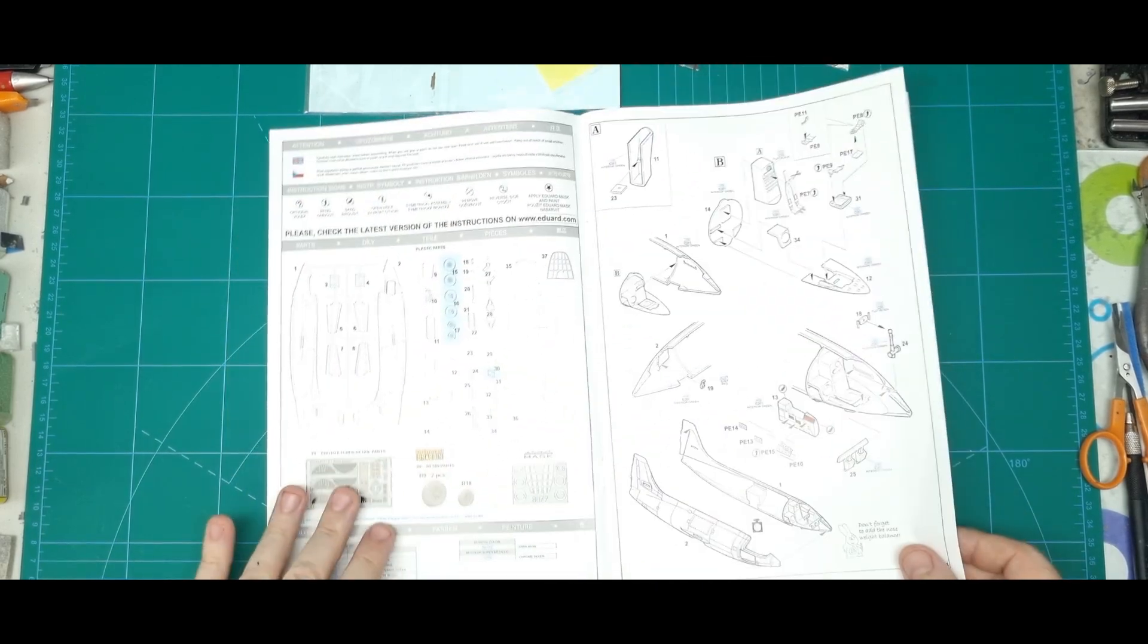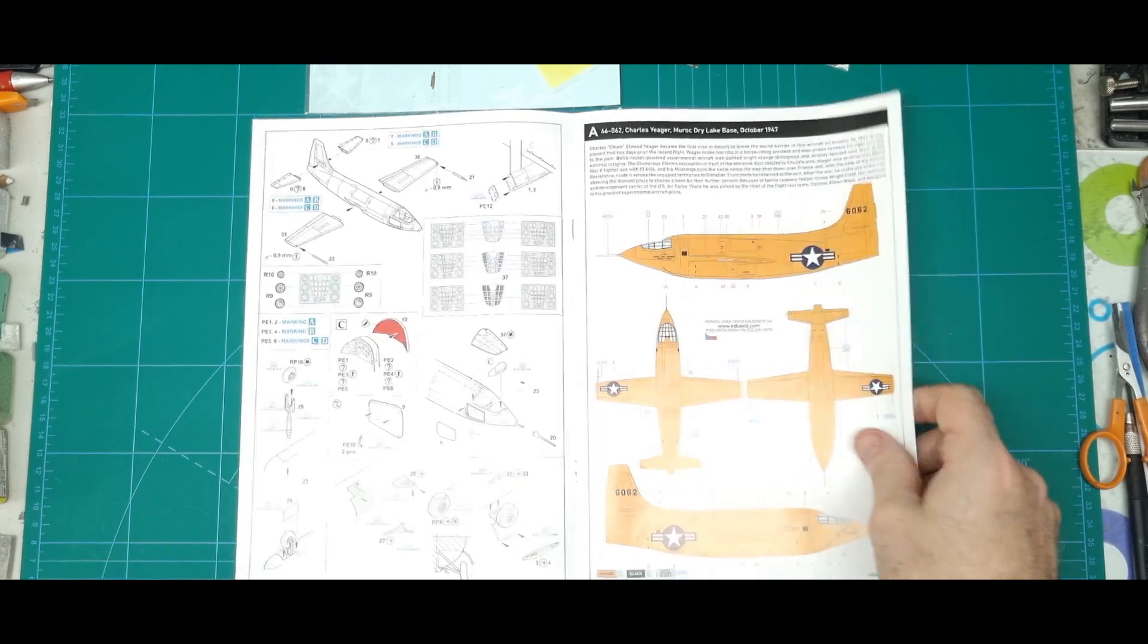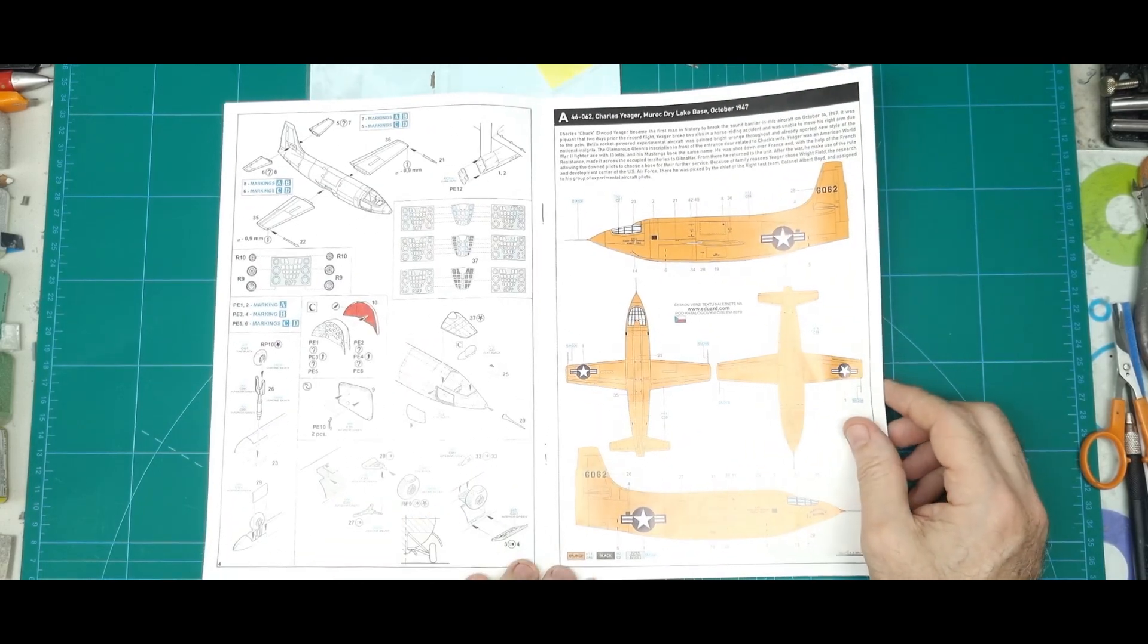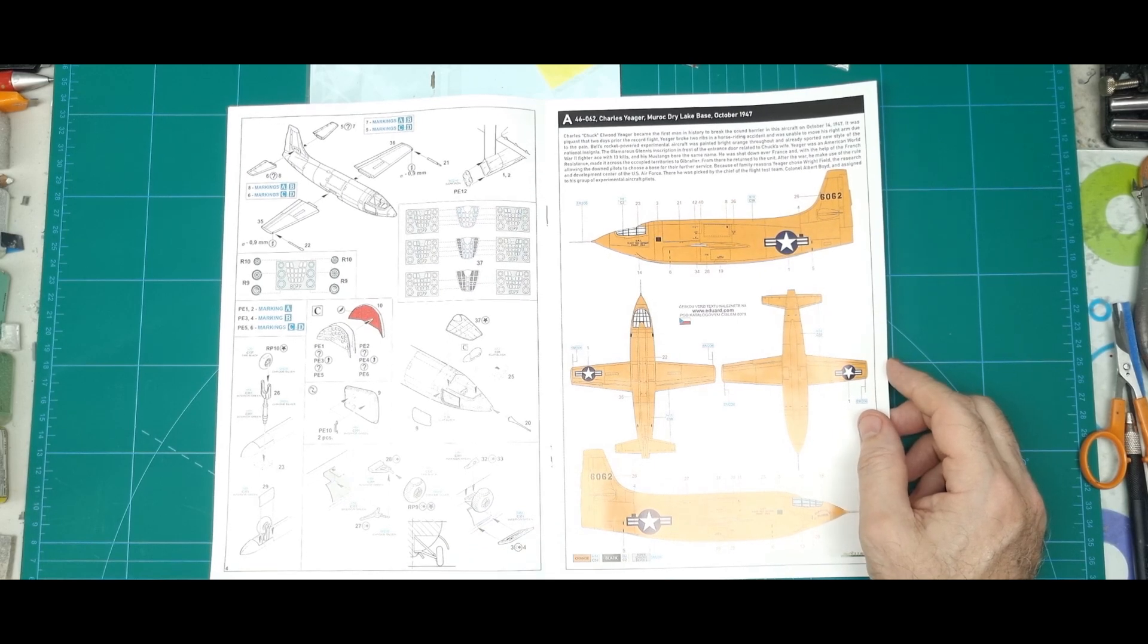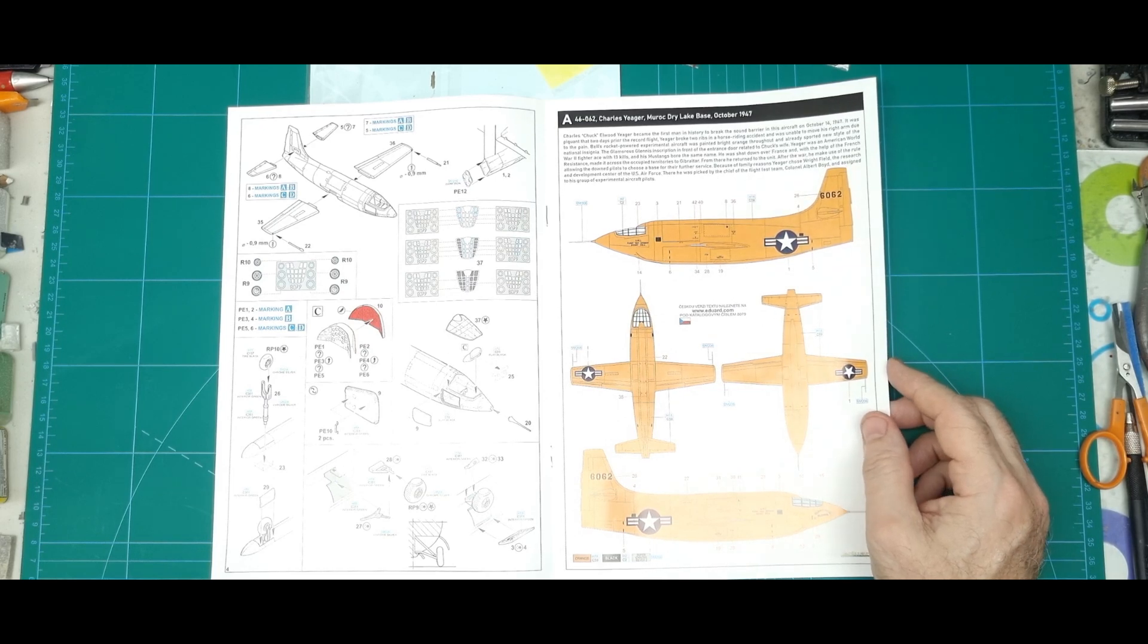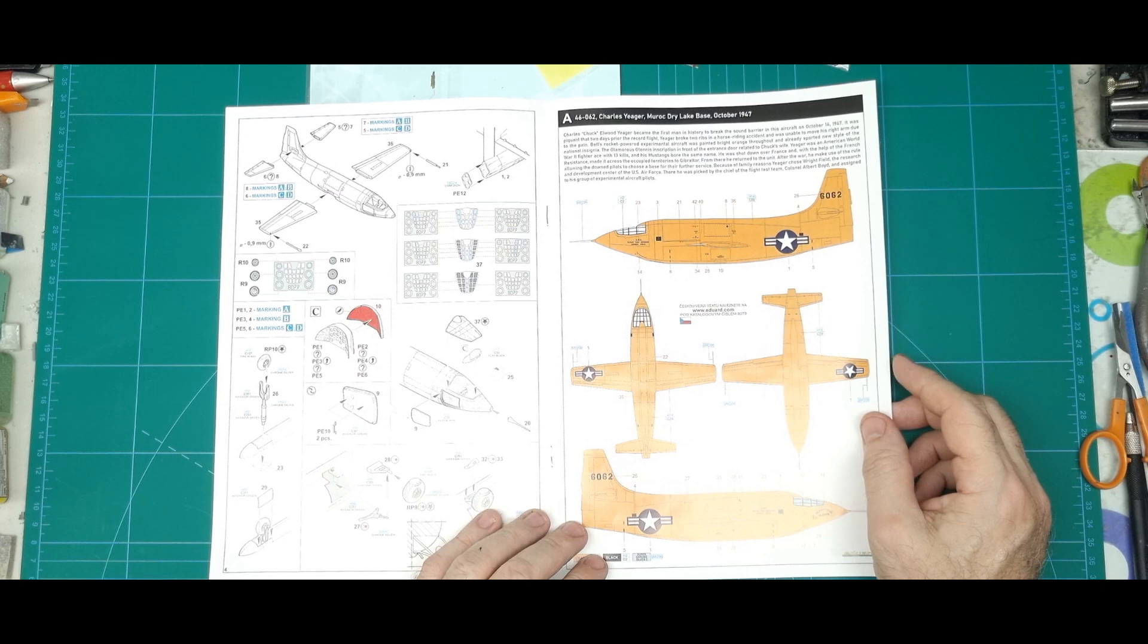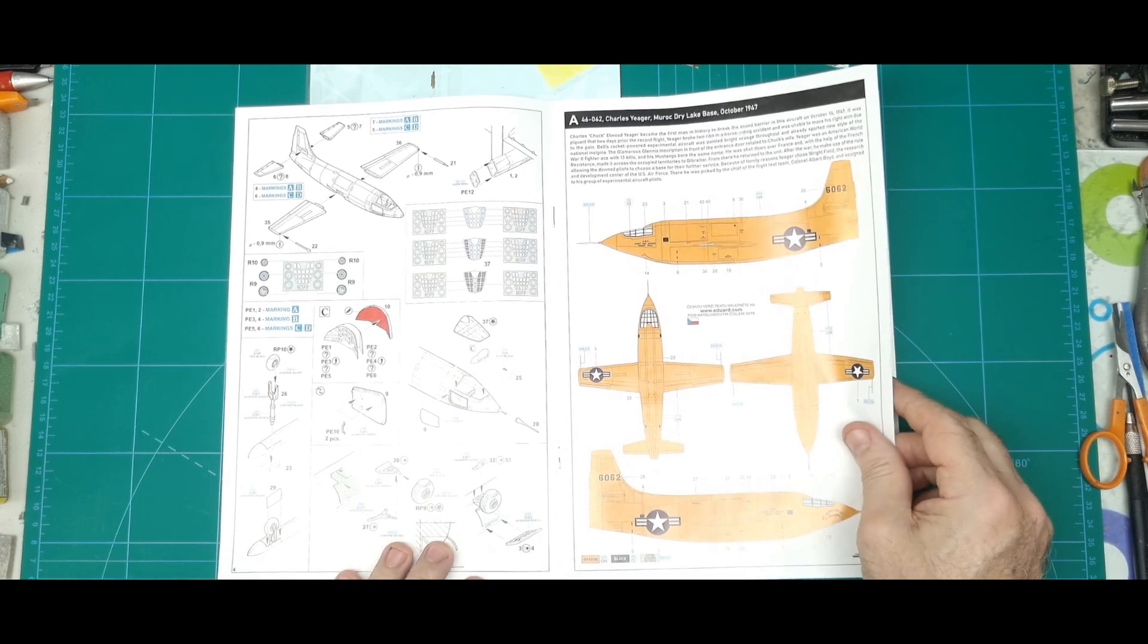So as you can see, huge instruction callout already into the paint schemes. So this is Chuck Yeager's aircraft. So this one's 1947. I won't bore you with all the details. So yep, all over orange.